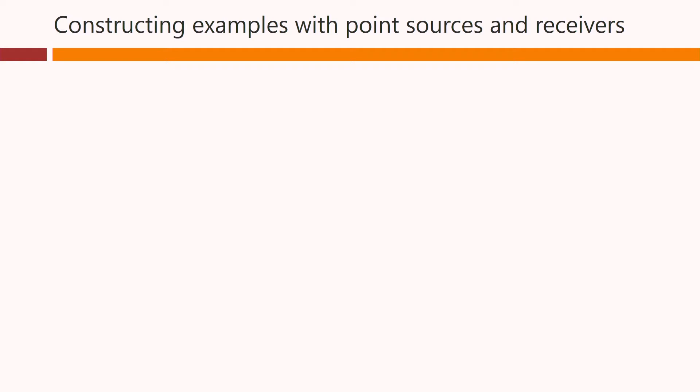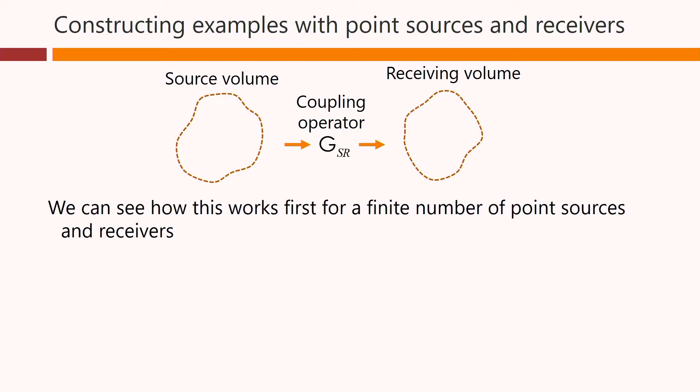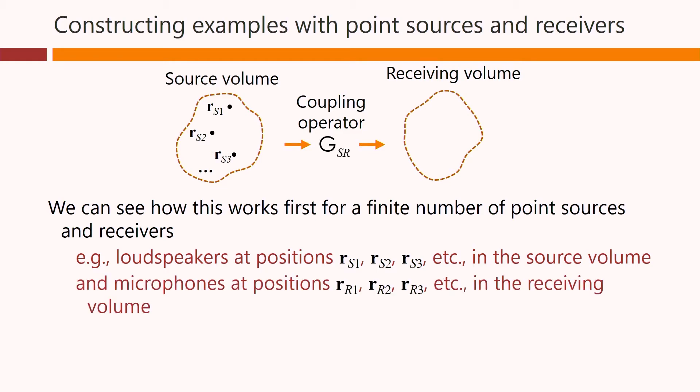All of this may be simpler to understand if we construct some simple examples. So we imagine we have our source volume, our coupling operator and our receiving volume, and we can see how this works first for a finite number of point sources and receivers. So for example, loudspeakers at positions r_s1, r_s2, r_s3, and so on, in the source volume, and microphones at positions r_r1, r_r2, and r_r3, and so on, in the receiving volume.